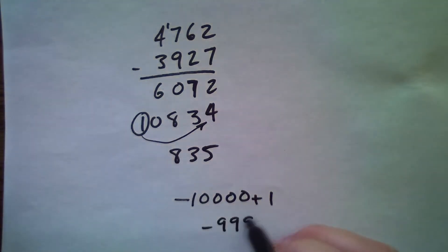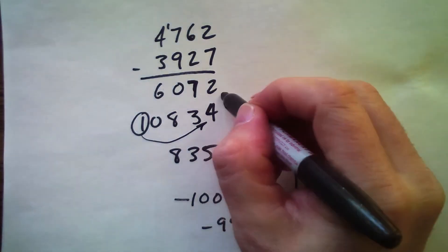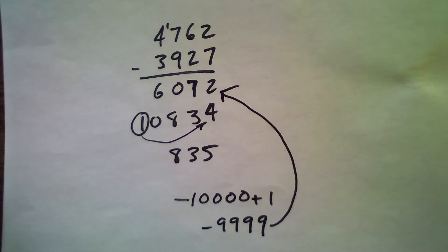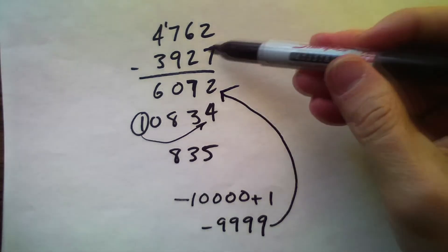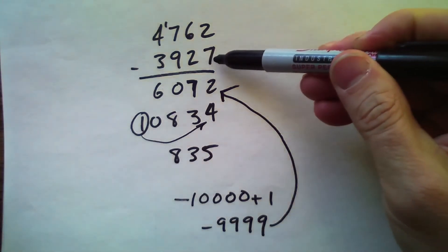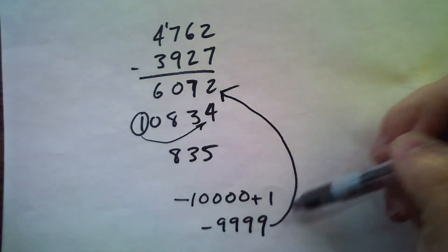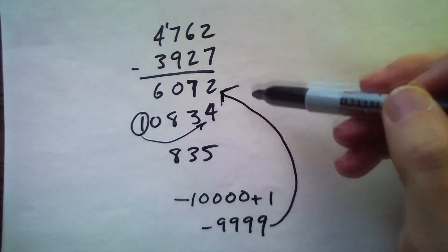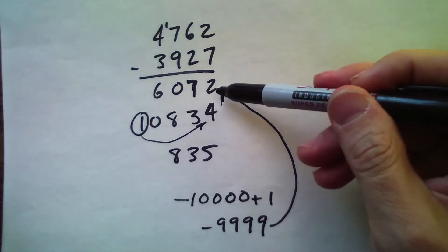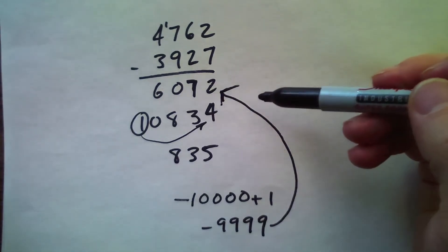And that should look fairly familiar because that's where we got that complement number - it was the complement of 3927 with respect to 9999. So this is all very conveniently connected.